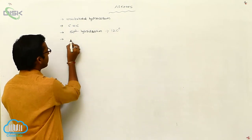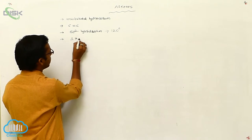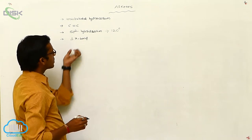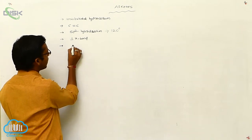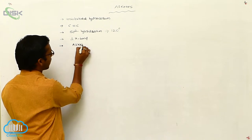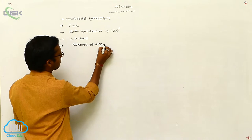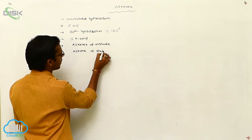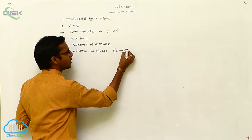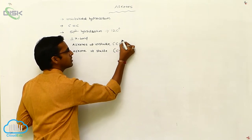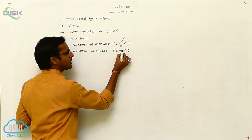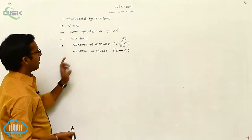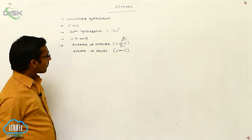These alkenes generally contain one pi bond. Due to the presence of this pi bond, alkenes are unstable compared to alkanes. Alkanes are stable molecules because they contain only carbon single bonds. The sigma bond requires more energy to break, whereas the pi bond is a weaker bond — that is why alkenes are unstable but alkanes are stable.